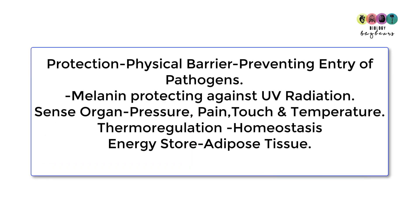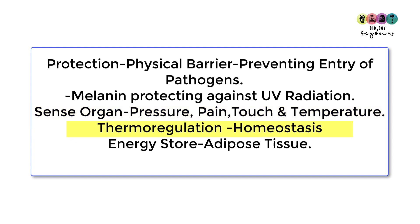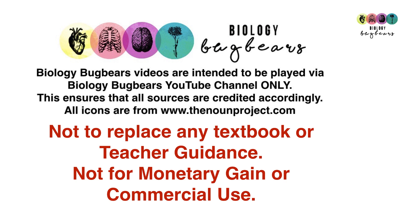In summary, the skin functions as a physical barrier protecting against pathogens, and melanin acts as a natural sunscreen protecting against harmful UV radiation. The skin is a large sense organ detecting pressure, pain, touch, and temperature. It's involved in thermoregulation as part of homeostasis, and it serves as an energy store — excess energy is stored as fat in the adipose tissue. Make sure you know the diagram of the skin and its functions, particularly what happens in thermoregulation.